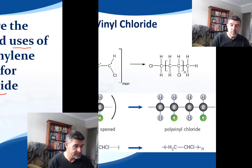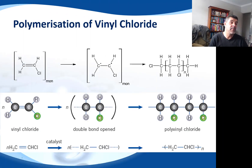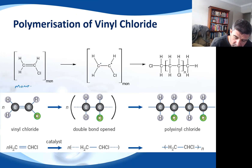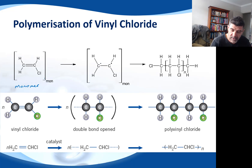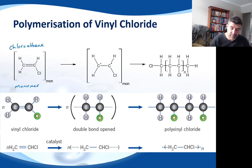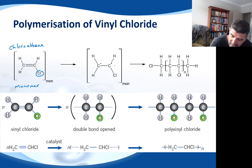Let's have a look at polyvinyl chloride. One of the key things when looking at polyvinyl chloride is that the monomer is different. The monomer is vinyl chloride, also called chloroethene, and the only difference from ethene is the presence of a chlorine atom. It's substituted for one of the hydrogens, so our ethene has become chloroethene.